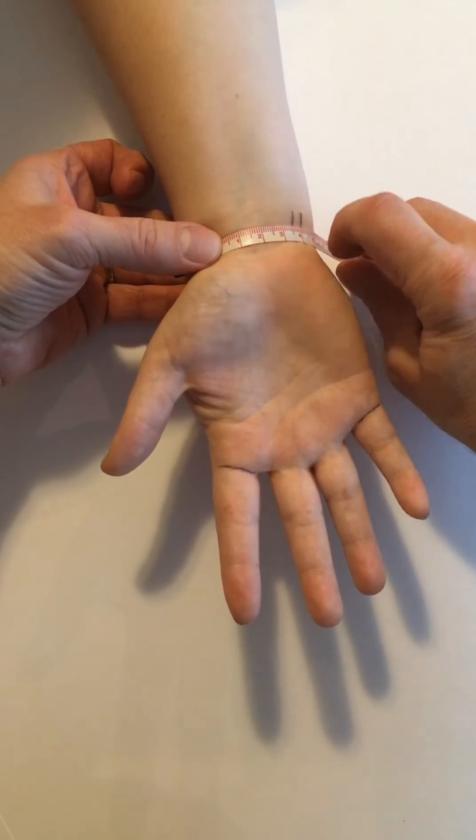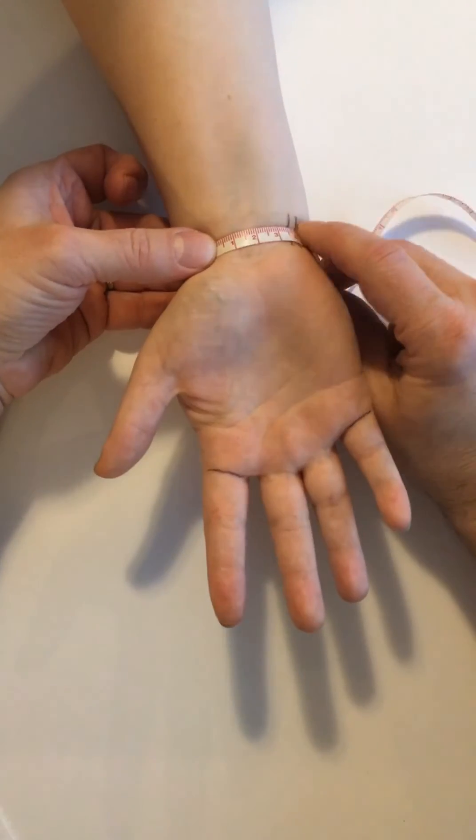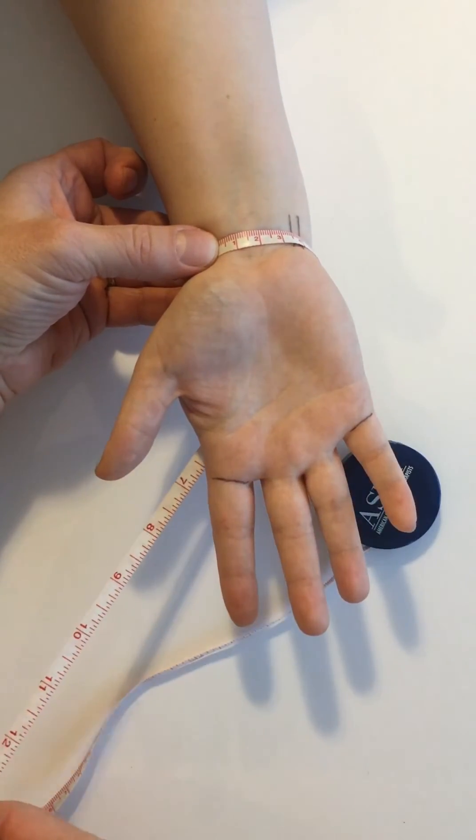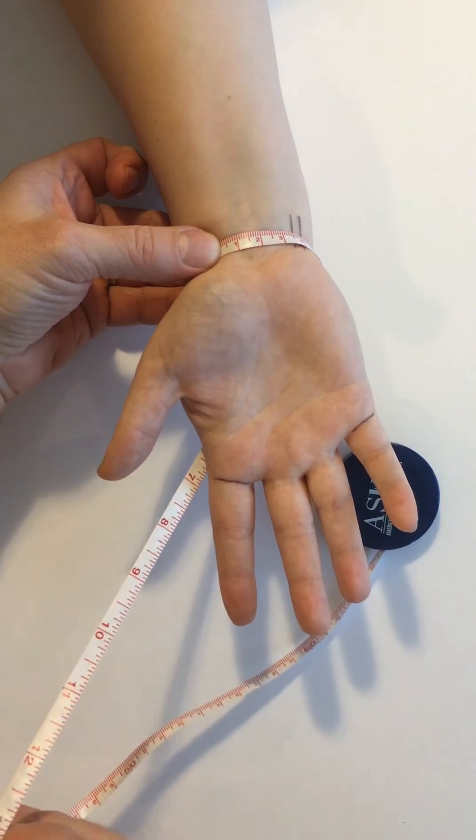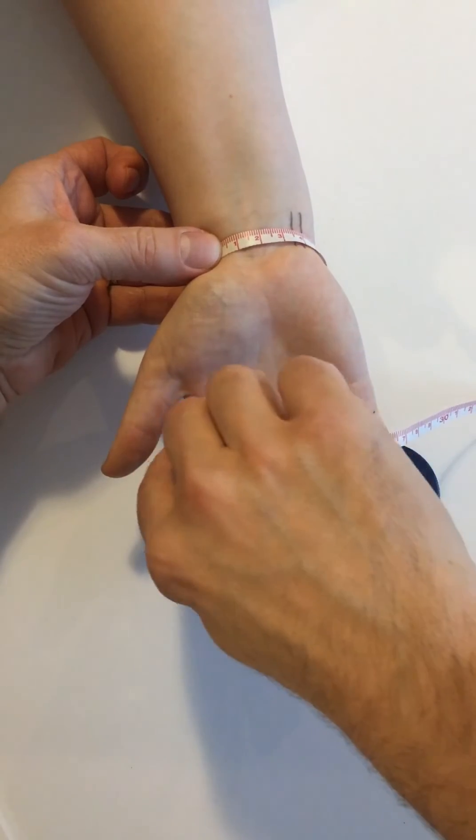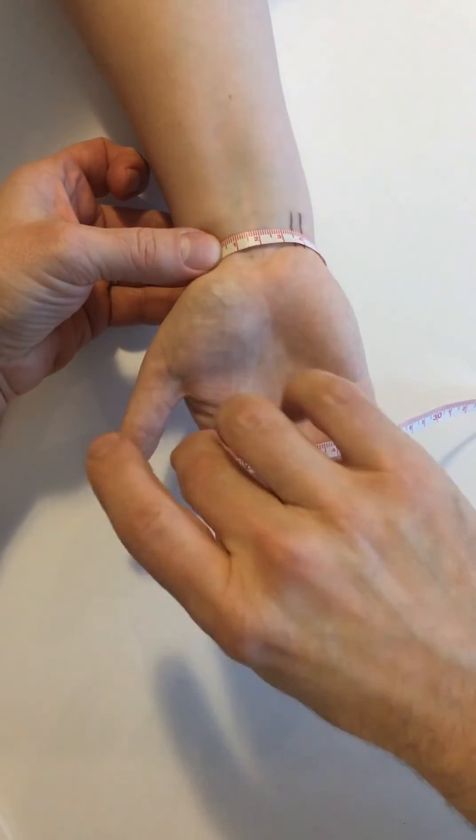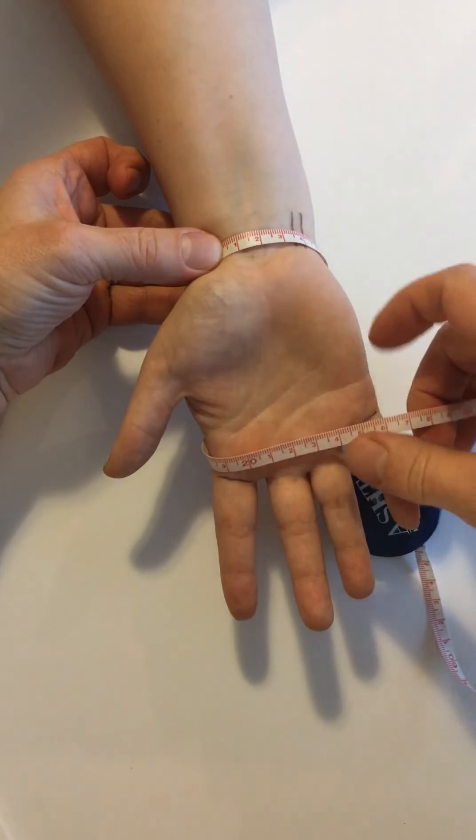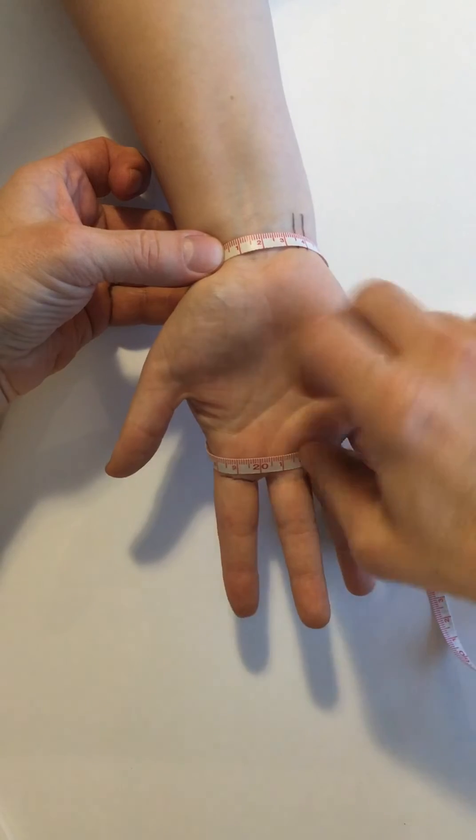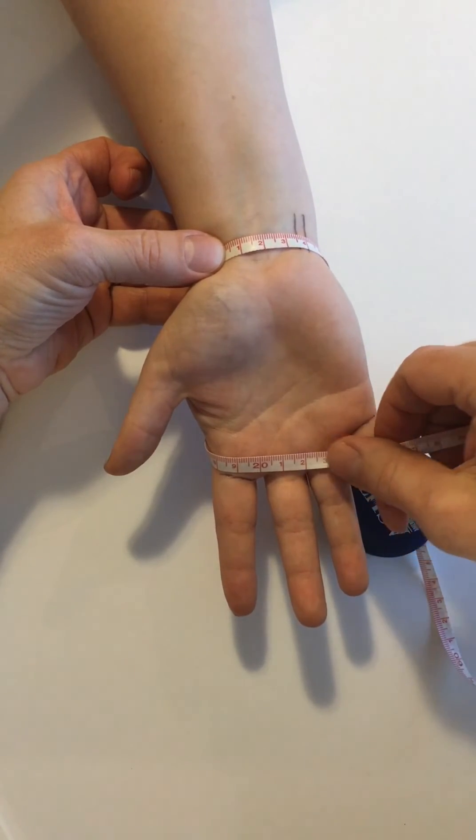Once we've crossed flexor carpi ulnaris we're going to take that and we're going to go obliquely and distally kind of an X across to the back of the hand there until we reach the second metacarpal. We'll go right through the midpoint of the second metacarpal head so that when we bring our tape across the palm we are just on the proximal edge of that palmer digital crease.